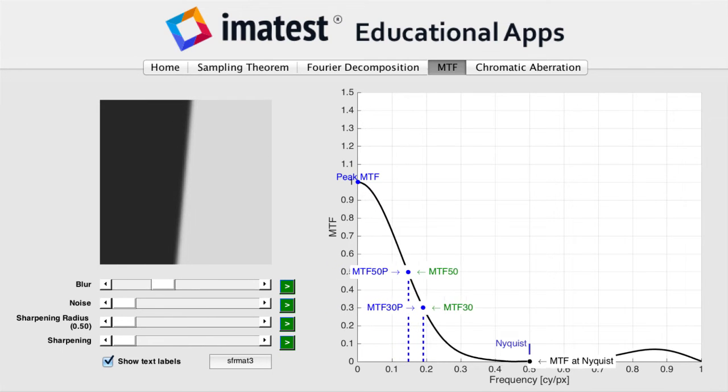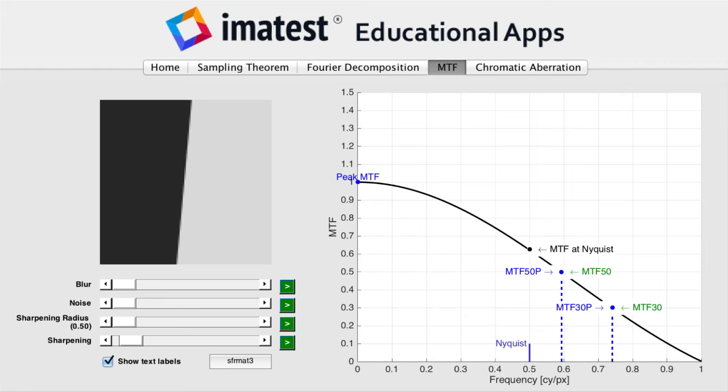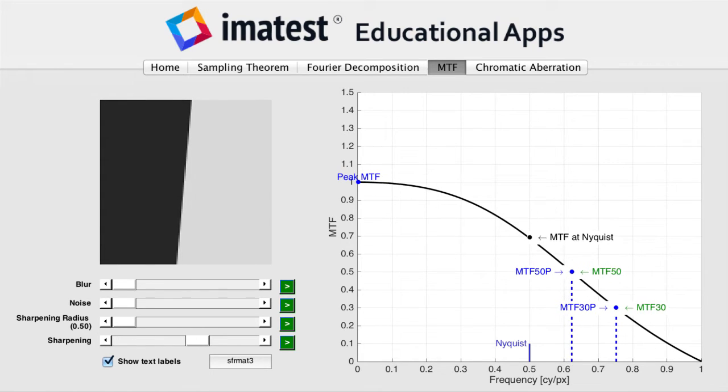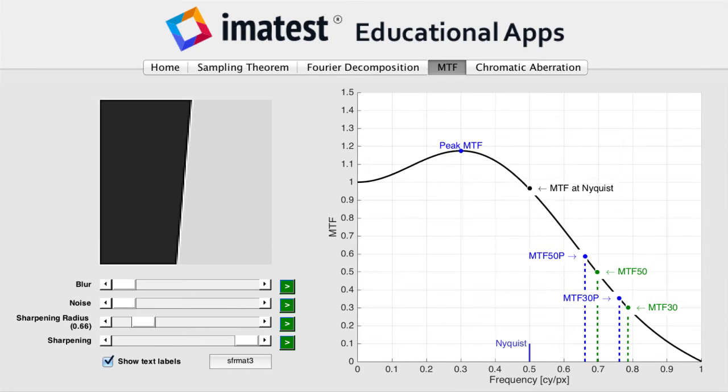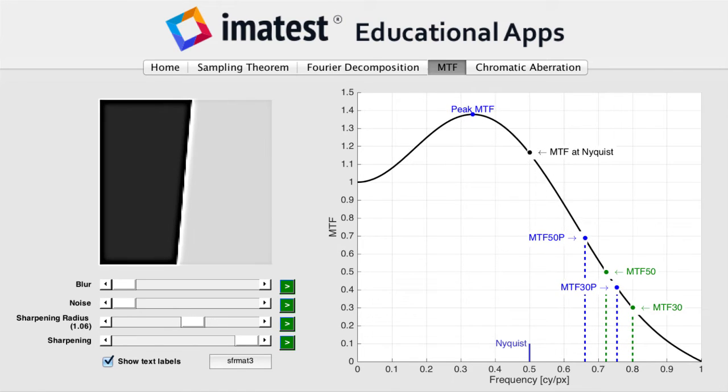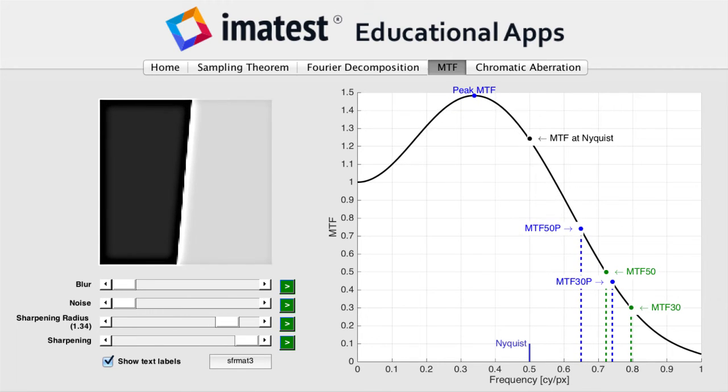Sharpening tends to increase MTF, and a reasonable amount of sharpening can increase perceived image quality. Over-sharpening can introduce halos and fringing around edges, which, if taken to extreme levels, can decrease perceived image quality.